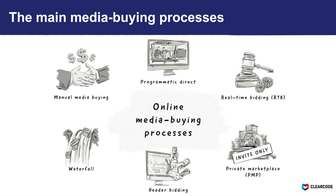Header bidding is a media buying process that enables publishers to simultaneously collect bids from a number of demand sources, such as DSPs, before their ad server loads other tags such as direct deals. The bids are collected via a piece of JavaScript code located in the website's header section — hence the name header bidding. Header bidding came about because of the inefficiencies of waterfalling and also because of Google's preferences towards its own ad products: because many publishers use Google's ad server, Google favoured bids from the Google ad exchange, causing demand from other platforms to miss out even if they wanted to pay more. With header bidding, publishers can collect bids from different demand partners via SSPs and ad exchanges, and pass the winning bid to their ad server to compete with other deals. There's also an open-source framework called Prebid which makes it easy for publishers to get started with header bidding.